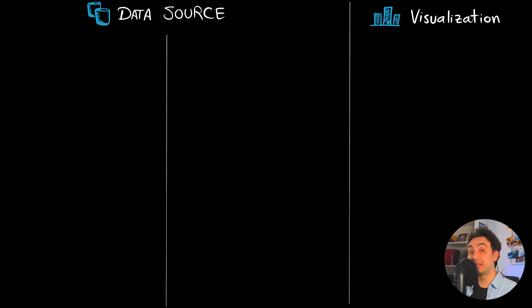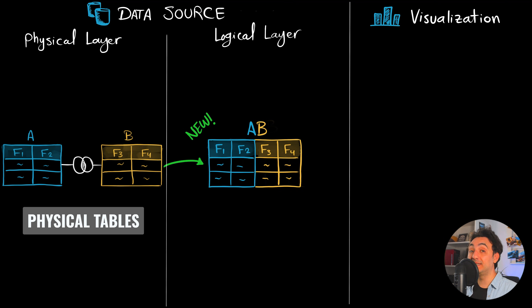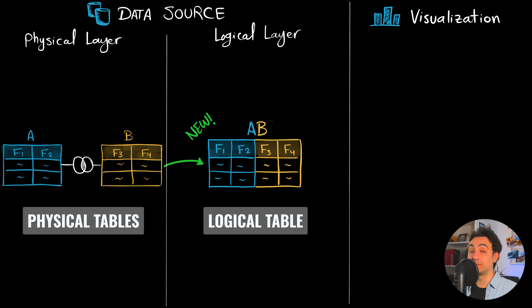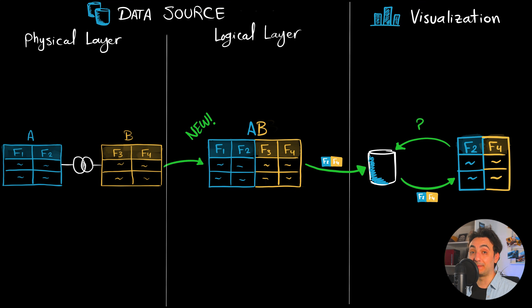Now let's understand how joins work in Tableau. We have the data source, the visualizations, and inside the data source we have the physical layer and the logical layer. In the physical layer we join tables A and B, and Tableau creates one new combined logical table A+B. In the visualization layer, when we select fields, Tableau queries the data source, which pulls from that combined logical table. The interaction happens at the logical layer — the physical layer is out of the picture.